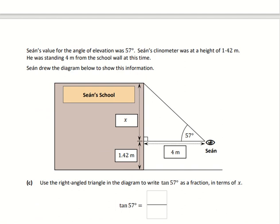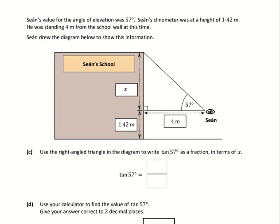Right, so for part c it's using sine, cosine, tan. We have to look at 57 here. All we have to do for this bit is write down what tan 57 is. Tan is the opposite over the adjacent, so tan equals opposite over adjacent. Therefore the opposite in this is x and the adjacent is 4.